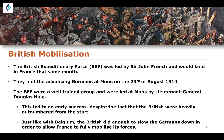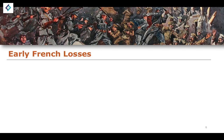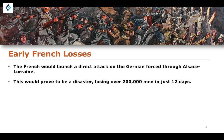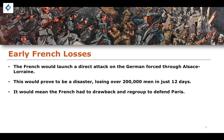In terms of numbers, the BEF was small compared to the German military, but the French military was far larger — and getting French mobilisation was the real priority. However, France did not start the war well. The French launched a direct attack on German forces through Alsace-Lorraine, but it proved a disaster. They lost 200,000 men in just 12 days. This initial attack was a failure, forcing them to withdraw and regroup to defend Paris.